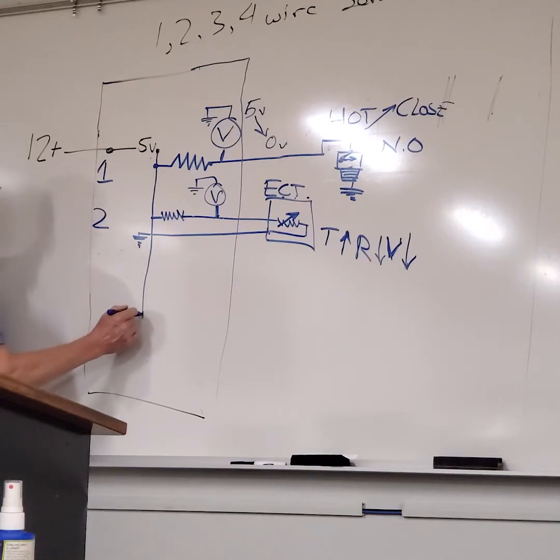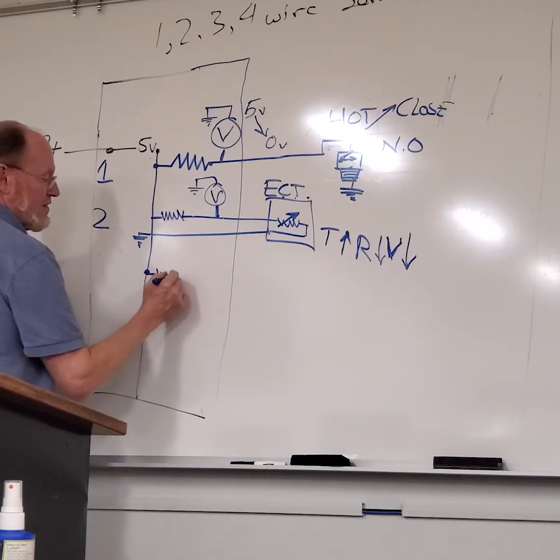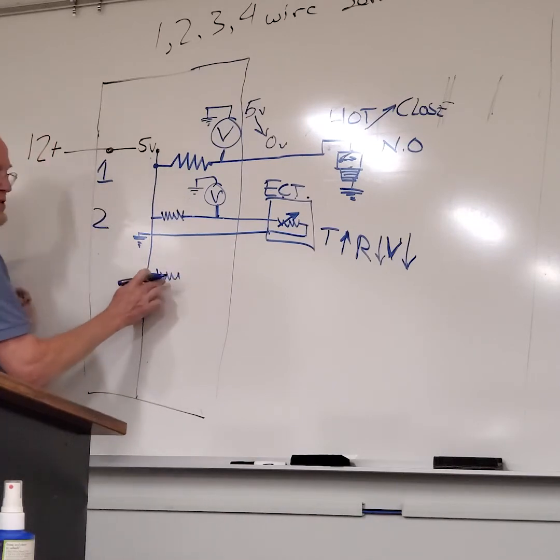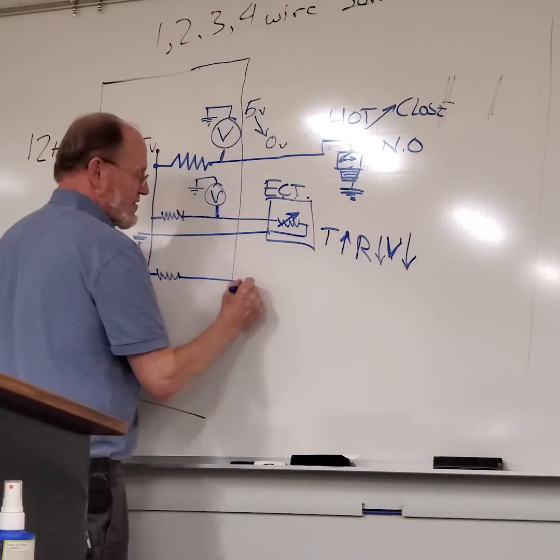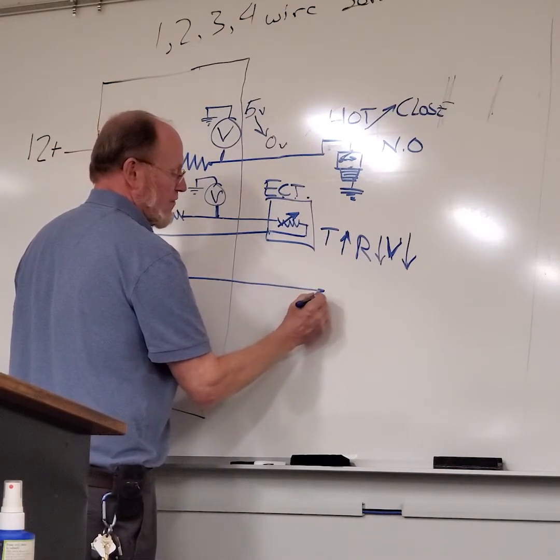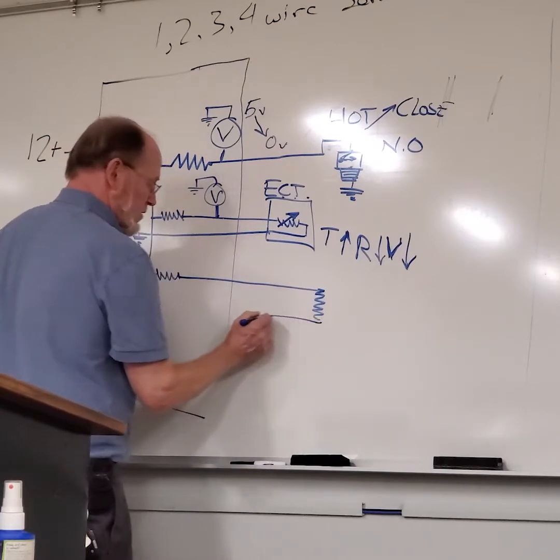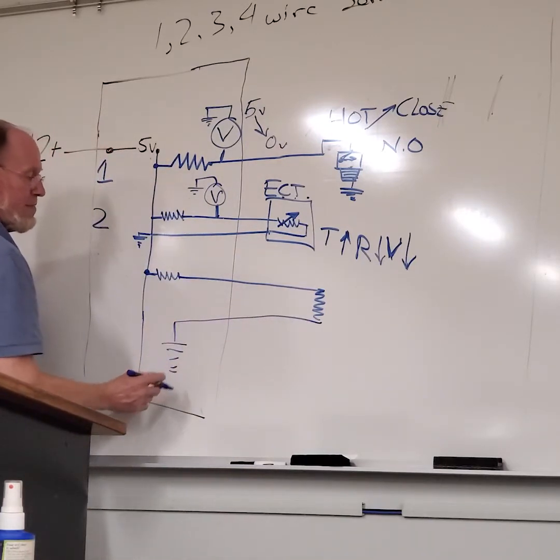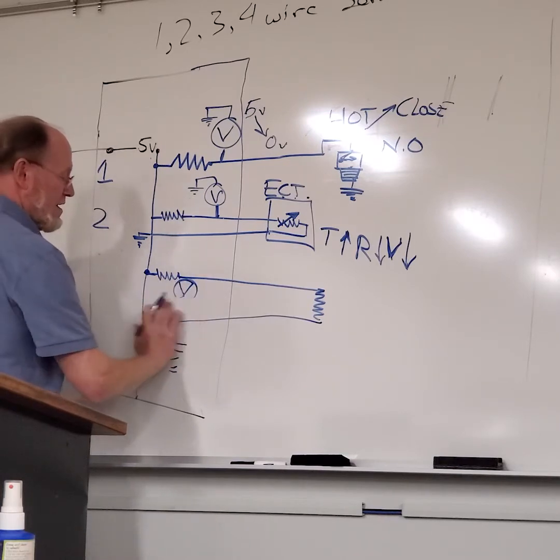Now a 3-wire sensor. I have my 5-volt feed. That 5-volt feed, there's a fixed resistor inside the ECM. The only purpose of that is to protect the output wire. So now that sensor voltage goes out to a fixed resistor here. Then it comes back and it has a ground inside the ECM, and then our AD converter inside the ECM.